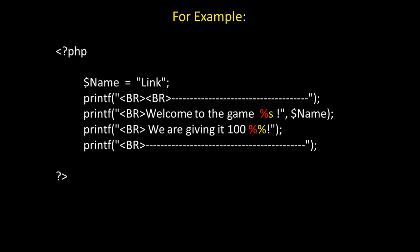Let's look at the following bit of code. The first call to the printf function just displays some simple HTML line breaks and dashes as a string literal within the parentheses as the argument. The second call to printf uses a formatting argument — the percent symbol and s to indicate a string — and then after the comma, the variable name, which will be 'link'. So ultimately the client will receive a webpage that says 'welcome to the game, link'. The third call to printf includes an HTML line break and says we are giving it 100, and then there are two percent symbols, because for a literal percent symbol we have to use two, since just one percent symbol indicates a formatting argument within the printf function.